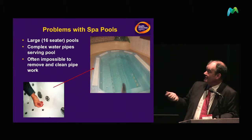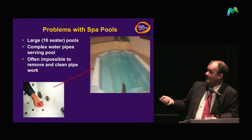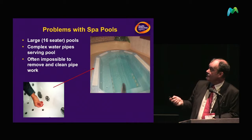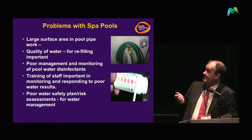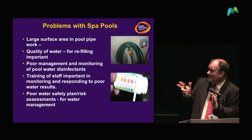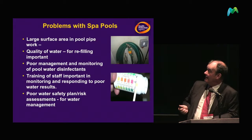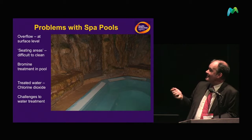Spa pools are also very difficult to keep clean. One of the favourite places when sampling is to look in the vents because they're incredibly difficult to clean, and when you take swabs you invariably tend to find some level of Legionella colonisation. The problems with spa pools include large surface areas, poor water quality, lots of carbon, and tend to get poor management — everyone hates looking after the spa pool.